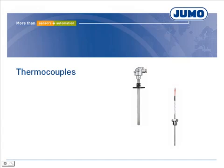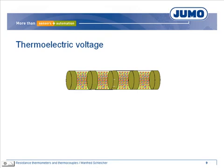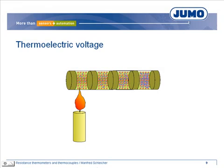We would like to start the topic of thermocouples with a short explanation of the thermoelectrical effect. Due to one-sided heating of a wire, the free electrons in this area move faster and towards the colder wire end. The electron density in the warm wire end becomes lower, while the electron density in the cold wire end rises. This results in a negative electric charge at the cold wire end and a positive electric charge at the warm wire end.